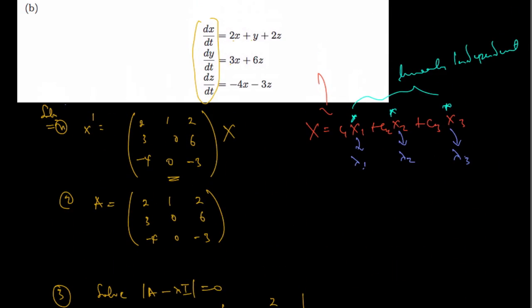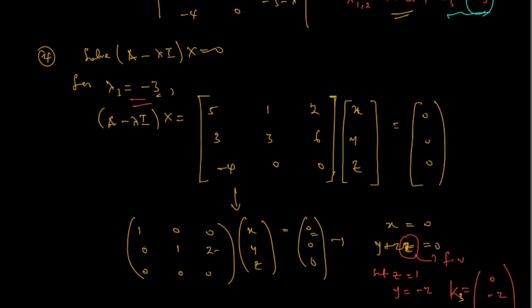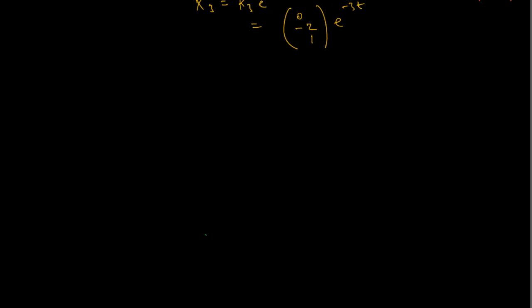We need to find the eigenvector that satisfies this homogeneous system, corresponding to the complex eigenvalue case. So we go ahead and find the eigenvector that corresponds to this complex eigenvalue. We've dealt with something like this in the last video, but this time we have a mixture. For the next case, that is for λ₁,₂ equals 1 plus or minus 2i, we have two values for lambda. So let's make lambda 1 be the one with a positive imaginary value, so lambda 1 equals 1 + 2i. The next thing we want to do is find the eigenvector that corresponds to lambda 1.